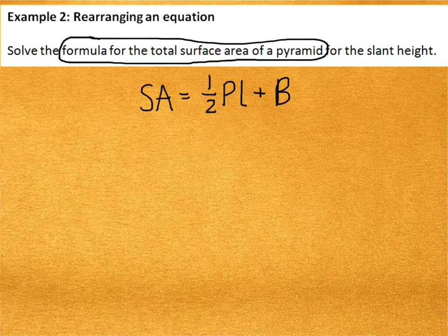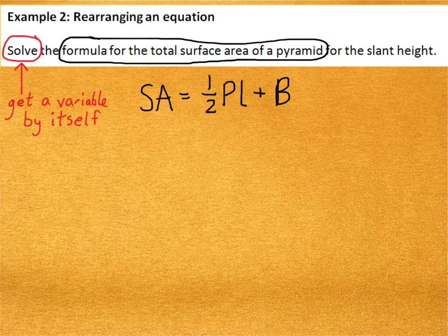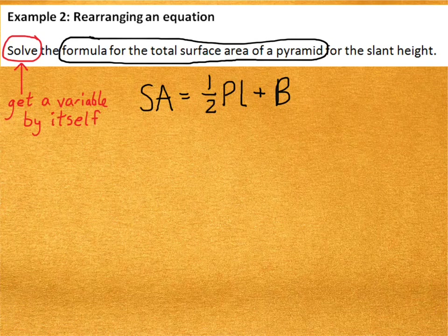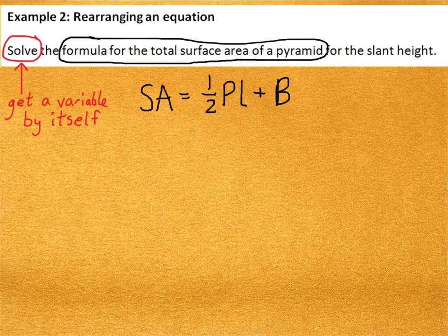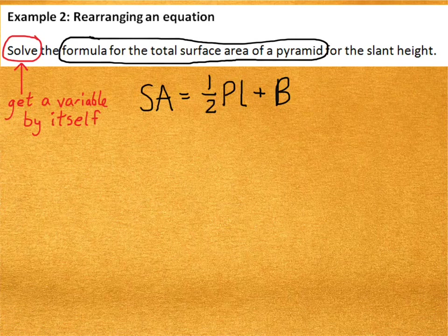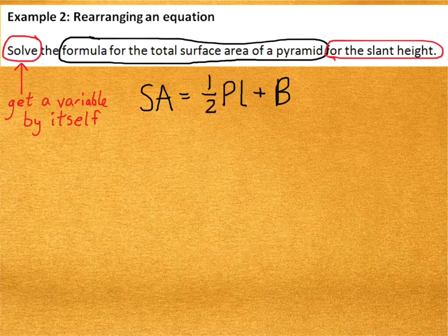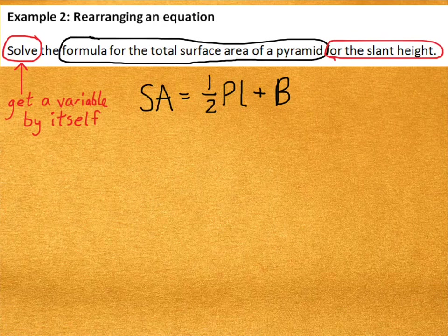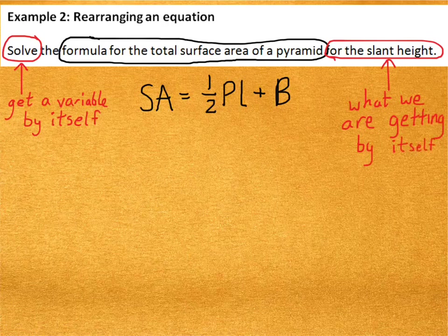Okay? This word solve at the front of the sentence, that means to get a variable by itself. It's more than just to get the answer to a question. When you see the word solve in math, it means that you're going to get a variable by itself. Okay? What variable are we getting by itself? Well, it says we're going to solve for the slant height. So, that must mean the slant height is what we are getting by itself. That would be the letter L.